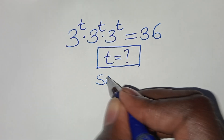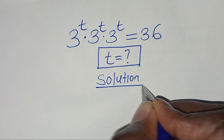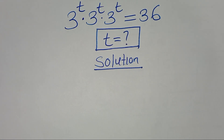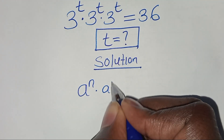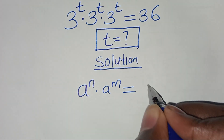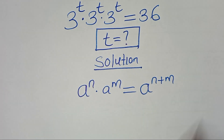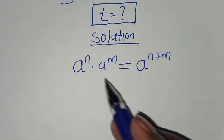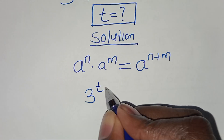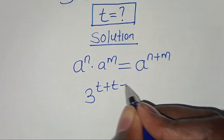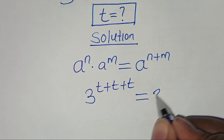Let's present a solution from here. This exponential equation is in the form of a to power n times a to power m, which we can express as a to power n plus m. Applying this exponential property, then we have 3 to power t plus t plus t, and this is equal to 36.